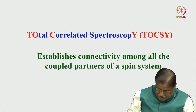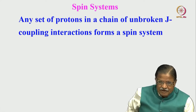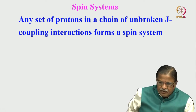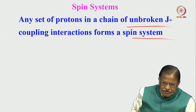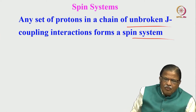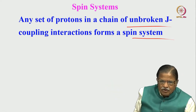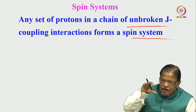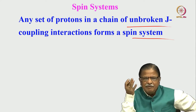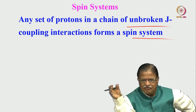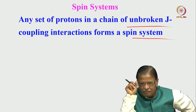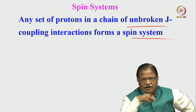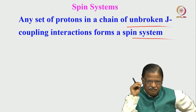A spin system is nothing but a set of protons in a chain of unbroken J coupling interactions. That means A may be coupled to B, B may be coupled to C, and so on systematically. All these spins should form part of a coupled spin system. One of the couplings may be zero — for example, with four spins 1, 2, 3, 4, spin 1 may be coupled to 2, 2 to 3, 3 to 4, and the 1–4 coupling may be zero — but it is still part of the coupled spin system. If there is a break in the chain, it forms a different spin system.